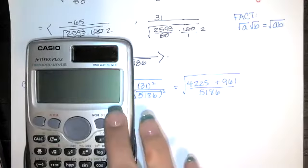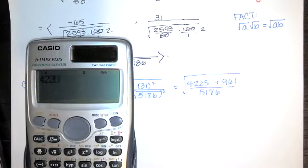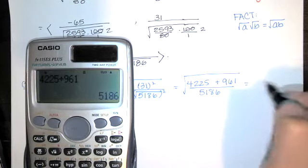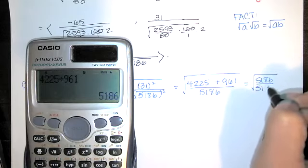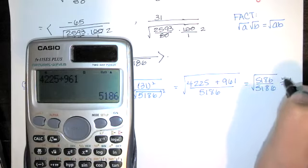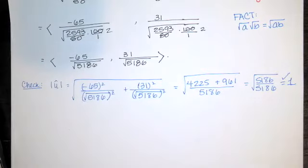Let's see if that numerator is 5186. It is. So we've got the square root of 5186 over 5186. We have the square root of 1, which is 1. So our unit vector is truly a unit vector.